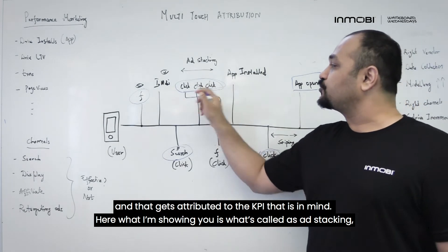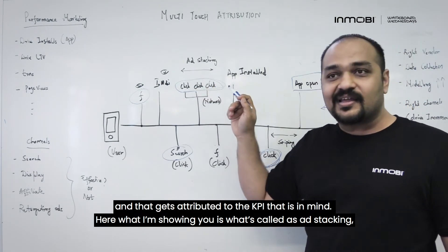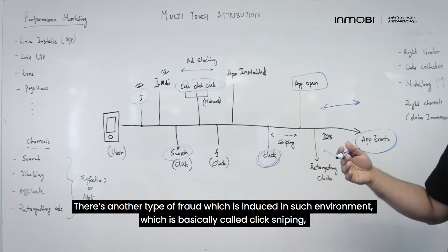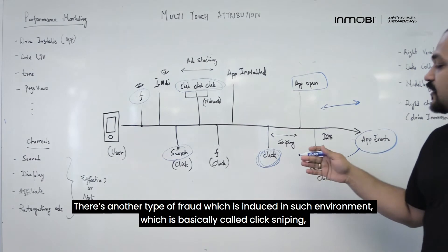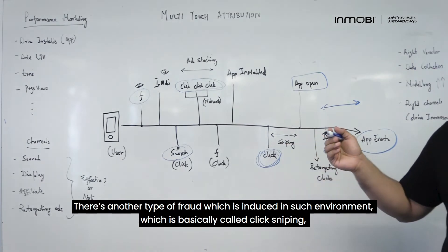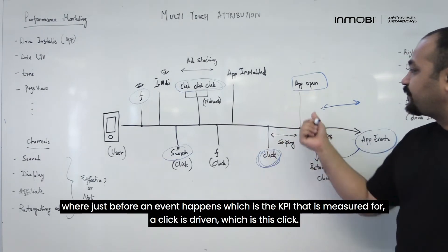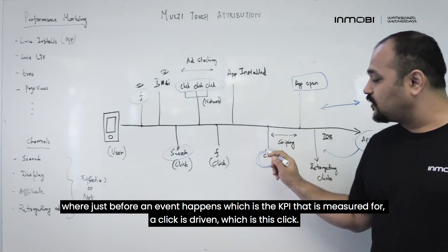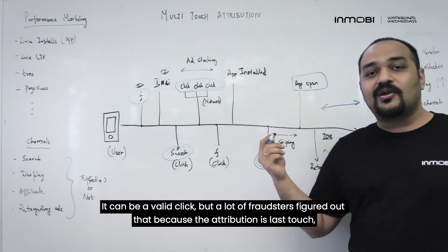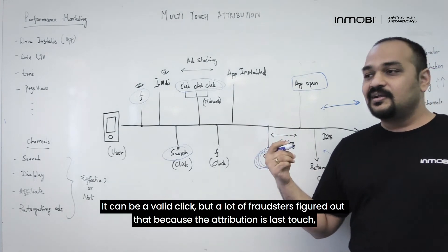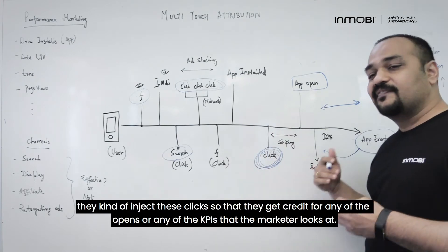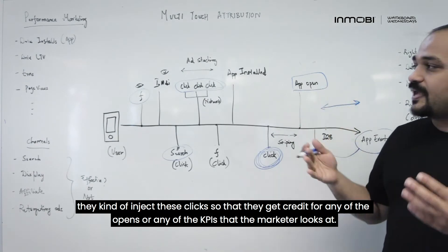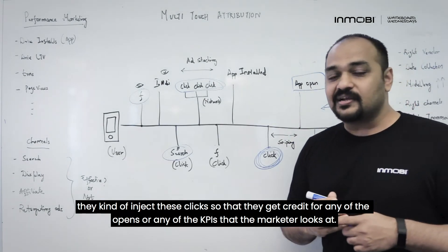What I'm showing you here is what's called ad stacking, where multiple clicks from the same device are triggered. There's another type of fraud in such an environment called click-side sniping, where just before an event happens — the KPI that is measured for — a click is driven. It can be a valid click, but a lot of fraudsters figure out that because attribution is last touch, they inject these clicks so that they get credit for any of the opens or KPIs that the marketer looks at.